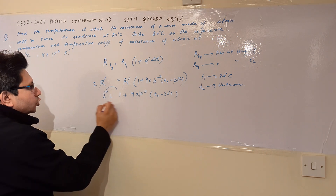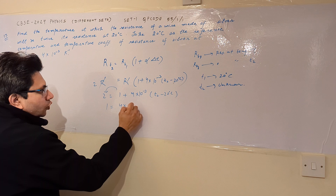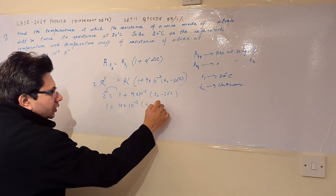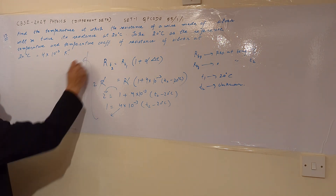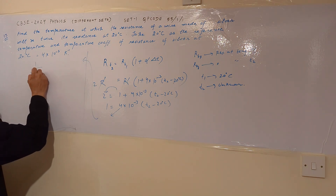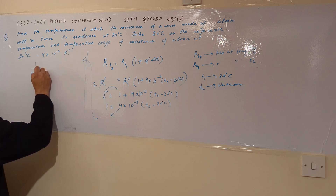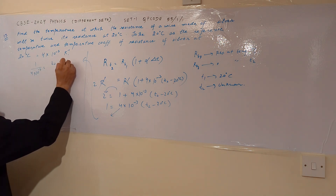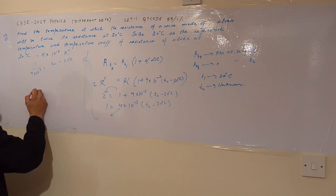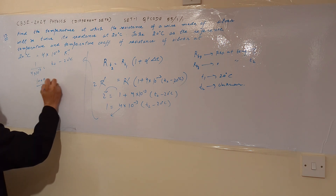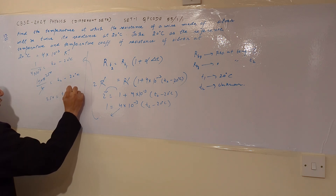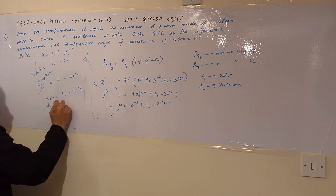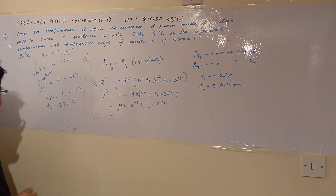Moving 1 to the left-hand side: 2 minus 1 equals 1, so 1 equals 4 into 10 to the power minus 3 times (T2 minus 20 degrees Celsius). Cross-multiplying gives 1 divided by (4 into 10 to the power minus 3) equals T2 minus 20 degrees Celsius. That is 250, so 250 equals T2 minus 20, giving T2 equals 270 degrees Celsius.